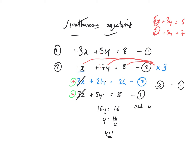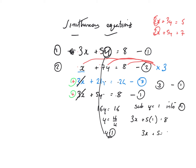I'm now going to substitute y equals 1 into one of the equations — it doesn't matter which one, they all give the same answer. I'm randomly going to sub it back into equation 1. So where I see y I'll replace it with 1: 3x plus 5 lots of 1 equals 8. That gives 3x plus 5 equals 8, so 3x equals 3, and x equals 3 over 3, which is equal to 1.